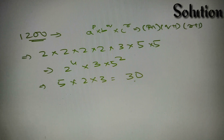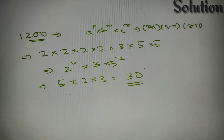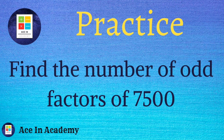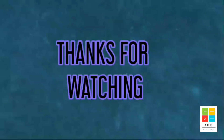5 × 6 equals 30. So 1200 has a total of 30 factors, and the answer is Option A: 30. See you next time.